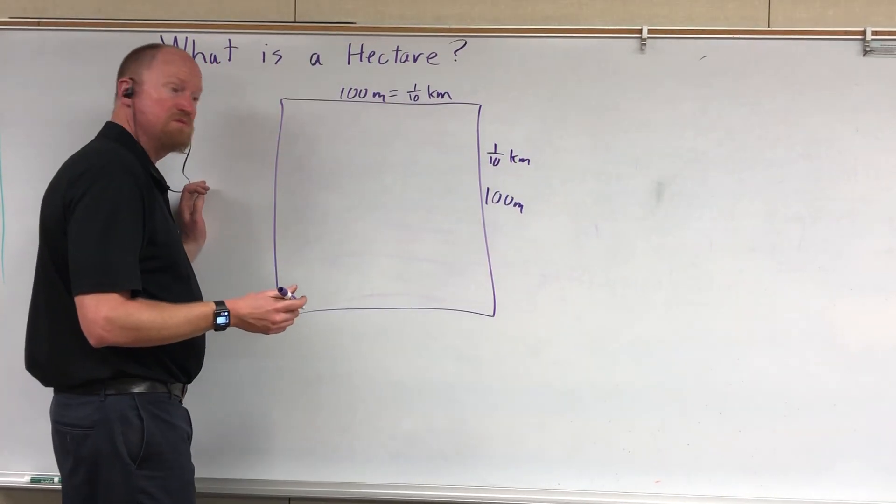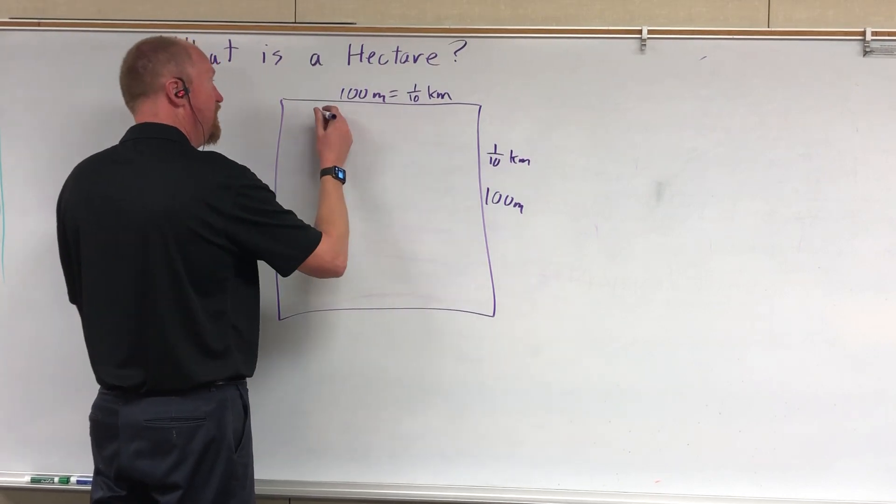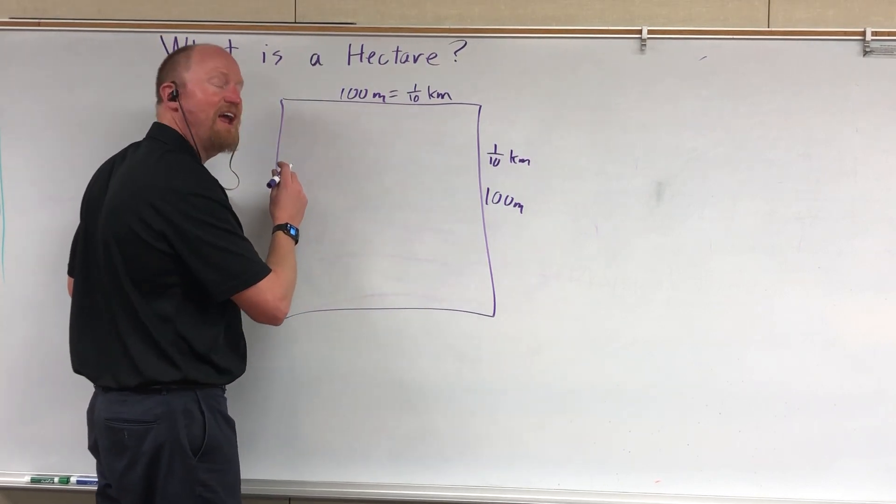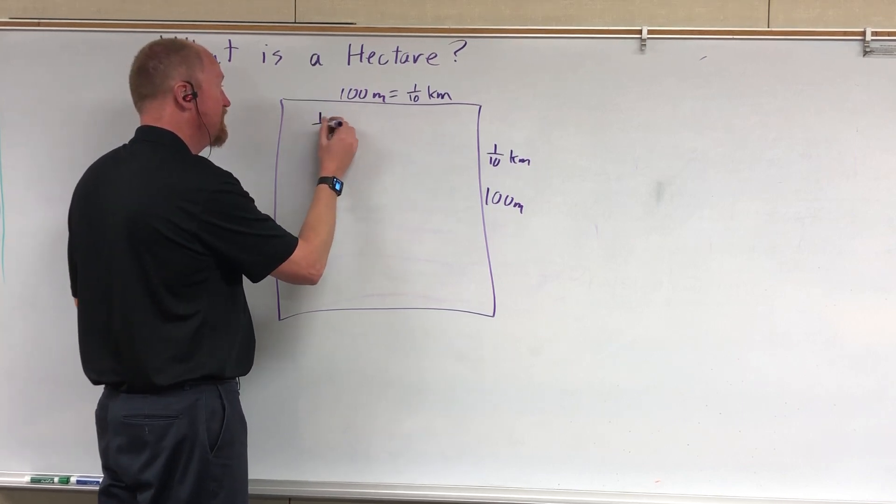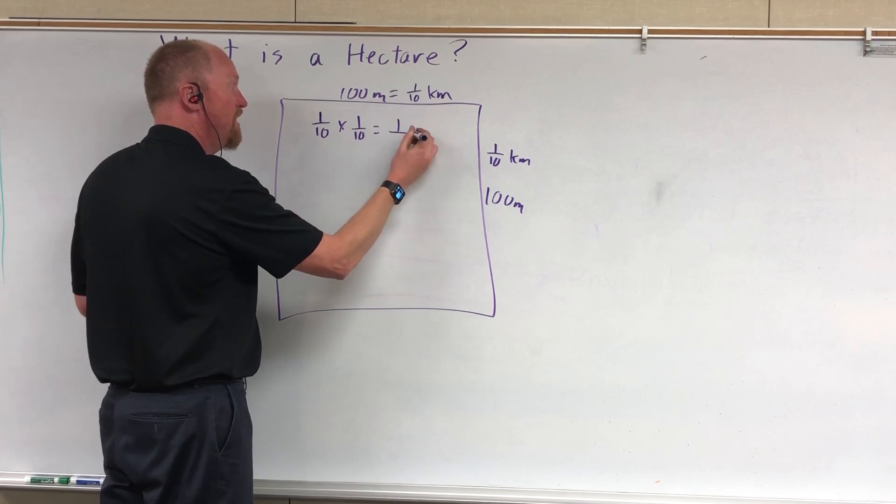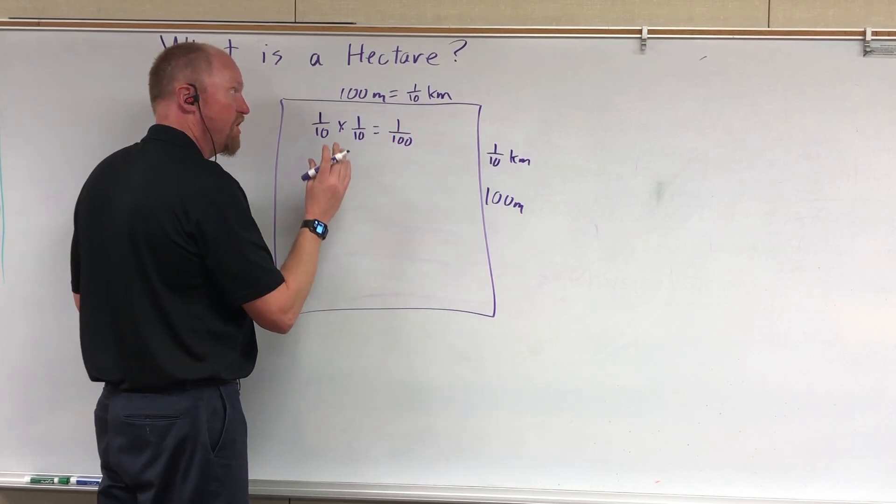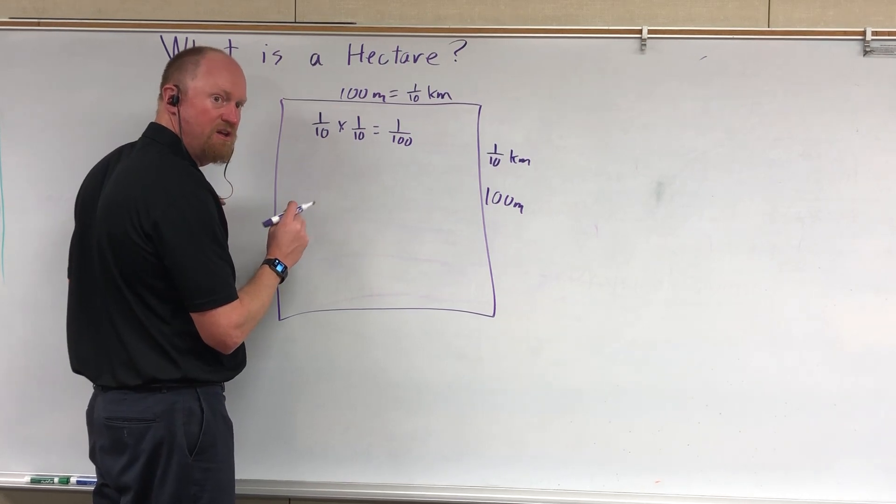And if you want to know what a hectare is in square kilometers, you simply multiply them just to get area. So one-tenth times one-tenth is equal to one-hundredth. So one hectare is one percent, one-hundredth of a square kilometer.